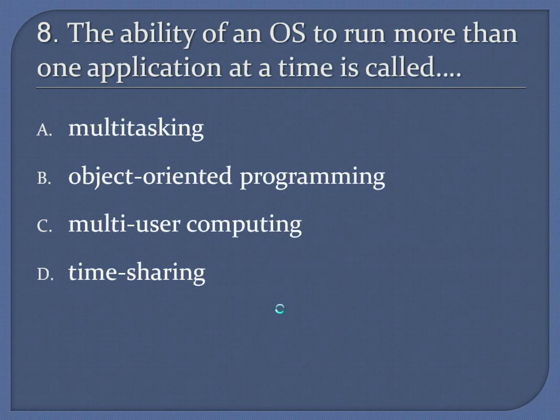Question 8: The ability of an OS to run more than one application at a time is called. A. Multitasking. B. Object-oriented programming. C. Multi-user computing. D. Time-sharing. Answer: Multitasking.